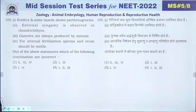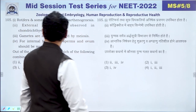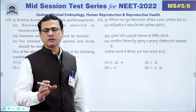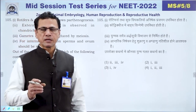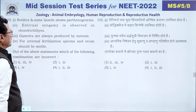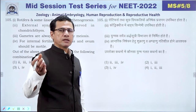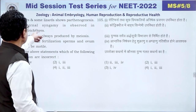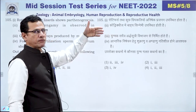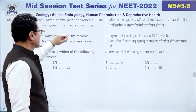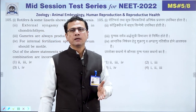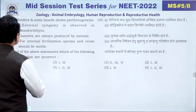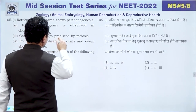Next question: rotifers and some lizards show parthenogenesis — development without fertilization. This statement is correct. Second statement: external fertilization is observed in chondrichthyes — actually chondrichthyes have internal fertilization, so this is wrong. Third statement: gametes are always produced by meiosis — exception: in honeybee drones, sperm are produced by mitosis, so this is also wrong.